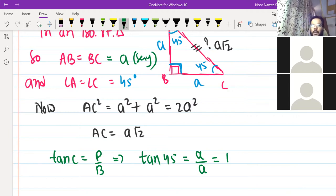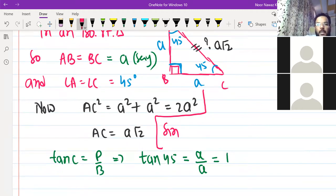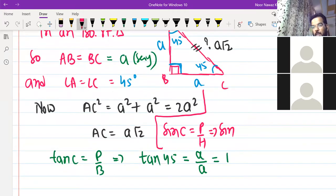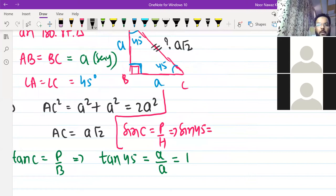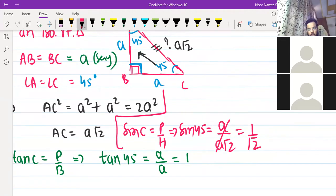You can also find sin 45. What will it be? Sin 45, sin C will be perpendicular by hypotenuse. Perpendicular upon hypotenuse. But C's value is 45 and perpendicular's value will be A, and we calculated hypotenuse as a root 2. So a cancels, what will we get? Sin 45 is 1 by root 2. So in this way, you can geometrically find all values: 30, 45, 60. These three values we have got.